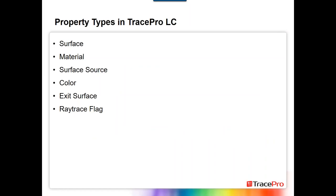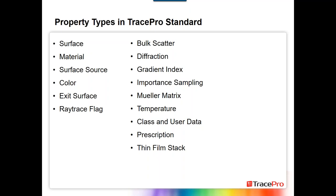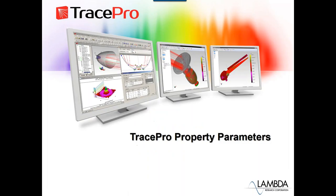Each edition of TracePro has different property types available. TracePro LC includes: surface property, material, surface source, color, exit surface, and ray trace flag. TracePro Standard adds bulk scatter, diffraction, gradient index, importance sampling, Mueller matrix, temperature, class and user data, prescription, and thin film stack. TracePro Expert includes all of those plus fluorescence, reptile, and temperature distribution. As you go up the line, each version adds new and additional property types.